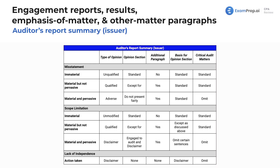Diving into issuers, we're going to see a lot of similarities, but just some differences. We're now having a section on if there's a lack of independence. We've got type of opinion, the opinion section, any additional paragraphs needed, and the basis for the opinion. As we saw before with non-issuers it was key audit matters, now we have critical audit matters. If we have an immaterial misstatement, pretty much the same as before. For immaterial scope limitation, again nothing crazy. We see the same type of opinion as for a non-issuer: material but not pervasive gets qualified; material and pervasive gets an adverse opinion, or for a scope limitation just get out of there as well.